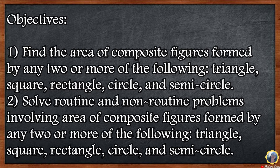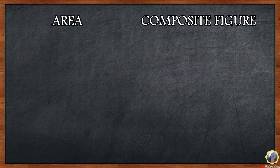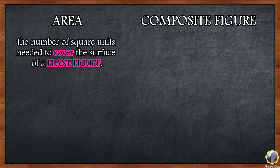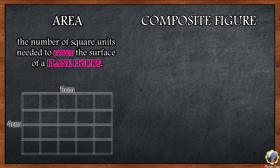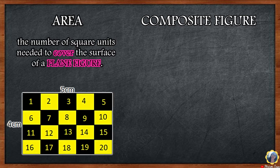Before we go to our lesson, let us define first area and composite figure. Area is the number of square units needed to cover the surface of a plane figure. For example, I have here a rectangle whose measure is 5 by 4 centimeters. Since the region is filled with 20 square centimeters, its area is 20 square centimeters. The number of square units is 5 times 4, which equals 20.